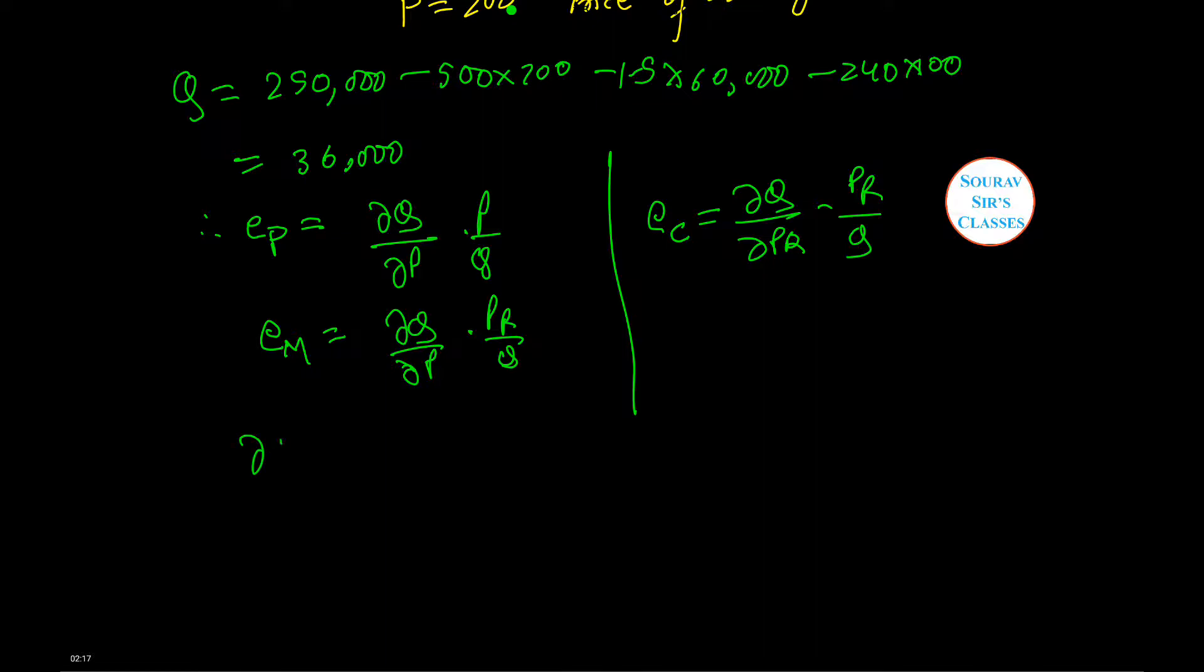We have DQ by DP equals minus 500. We have DQ by DM which equals minus 1.5, and DQ by DPR which equals minus 240.